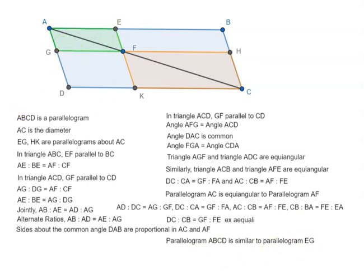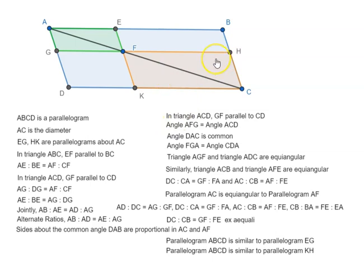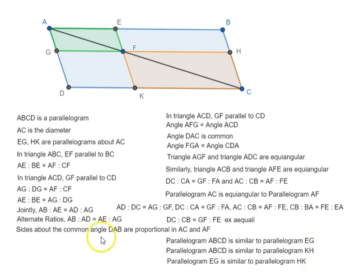Similarly, we can show that parallelogram ABCD is similar to parallelogram KH, and since ABCD is similar to both EG and KH, that means EG and KH are themselves similar to each other.